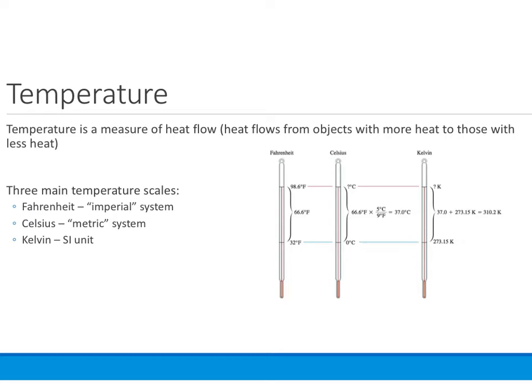There are three basic temperature scales that we are going to use. Because we live in the U.S., we have Fahrenheit, where water freezes at 32 degrees Fahrenheit and boils at 212 degrees Fahrenheit. Celsius is the metric version, where water freezes at 0 degrees C and boils at 100 degrees C.